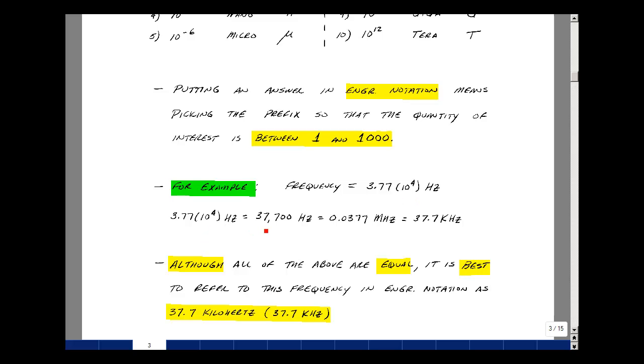I could write this as 37,700 hertz, or as 0.0377 megahertz, or I could move this decimal place over three places and you have 37.7 kilohertz. Now, all of these are equal, but in this course it would be best to use the results right here in this last case of 37.7 kilohertz.